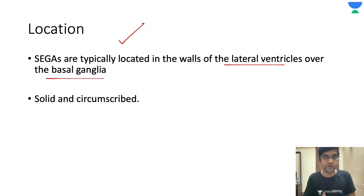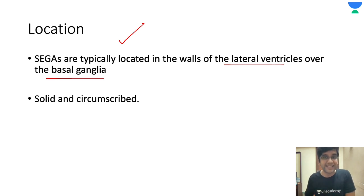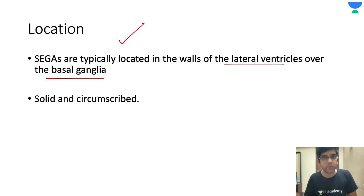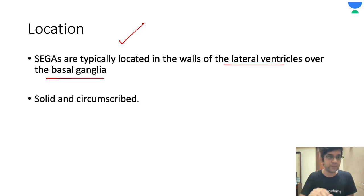One common advice I like to give to all practicing pathologists is: never report any CNS tumor without radiology, because radiology gives me lots of inputs. I don't want to miss a CNS tumor, especially when you're doing it in a frozen section or a squash cytology. Radiology is very, very important. Please consult with the radiologist and have a good idea of what is T1-weighted and T2-weighted imaging — that will definitely help with diagnosis.